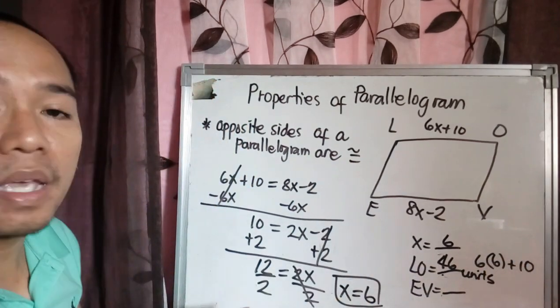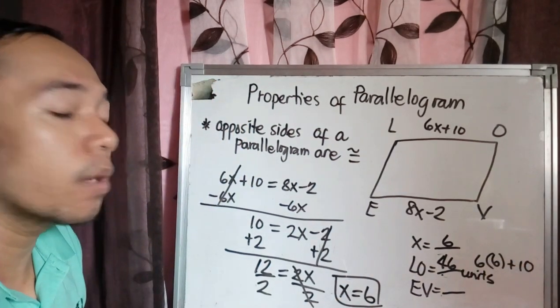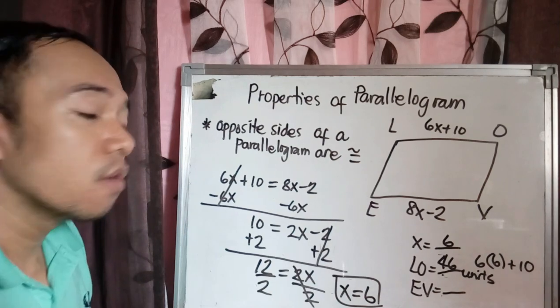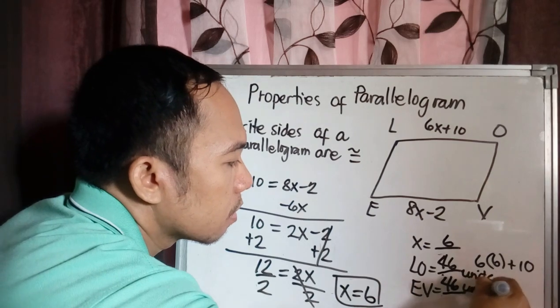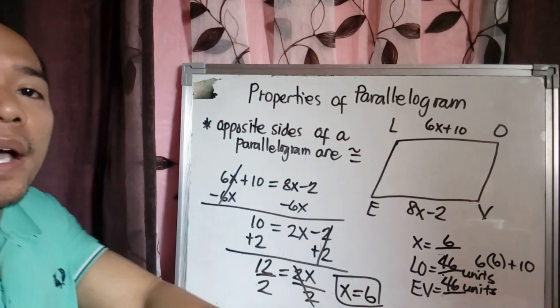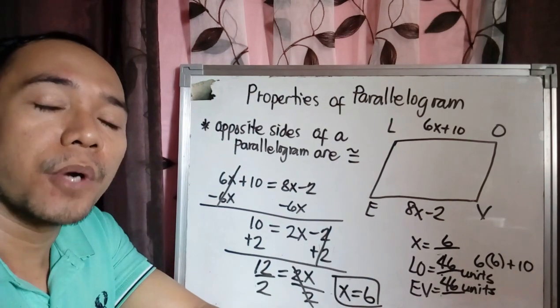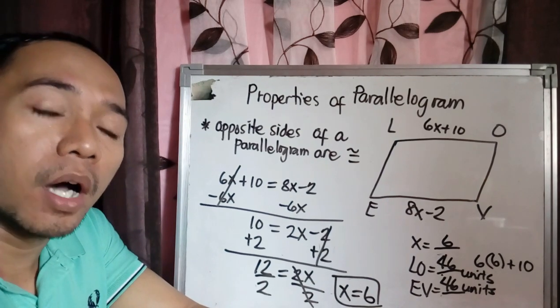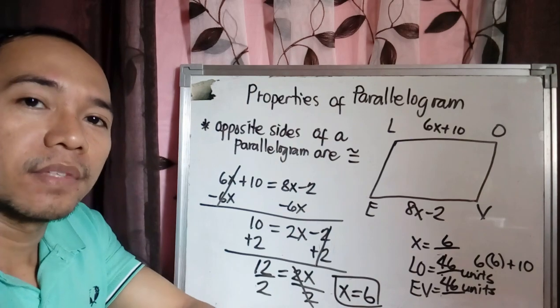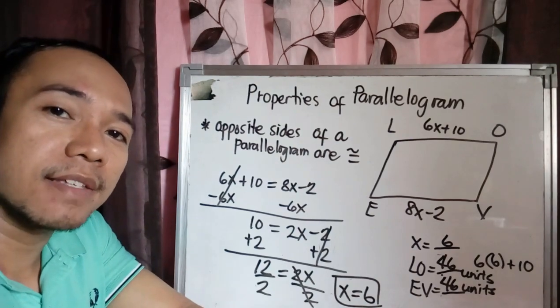And since they are equal, therefore our EV is also 46 units. So this is how we apply the first property, which is opposite sides of a parallelogram are congruent. Let's proceed to the second example.